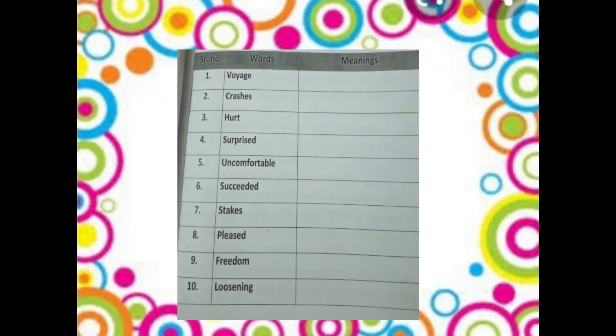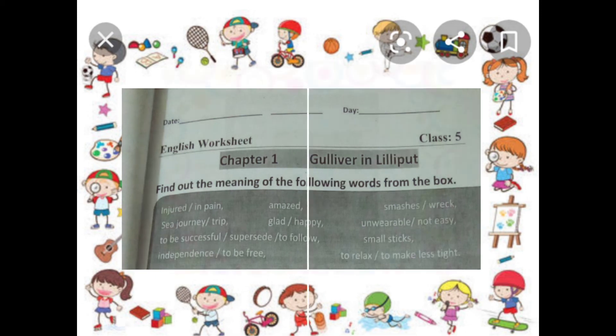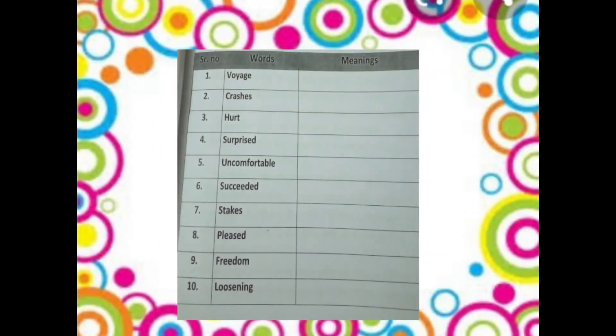Number one word is voyage. Voyage means سمندری سفر. Now from the word bank meanings I gave you, which one means سمندری سفر? Good — sea journey or trip. You have to find out the meanings of all the words like this. Crashes means ٹوٹ جانا. Hurt means زخمی ہو جانا. Surprised means حیران کر دینا.